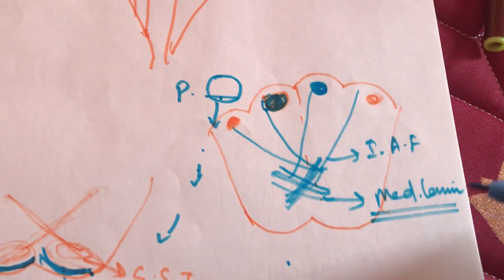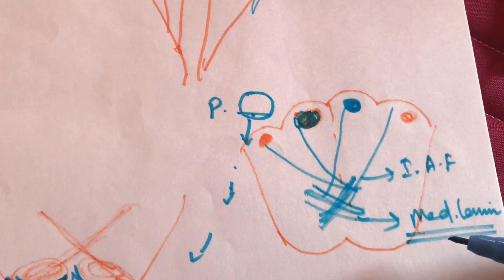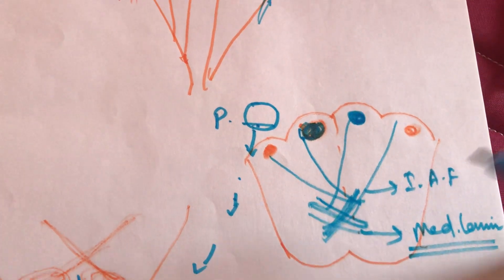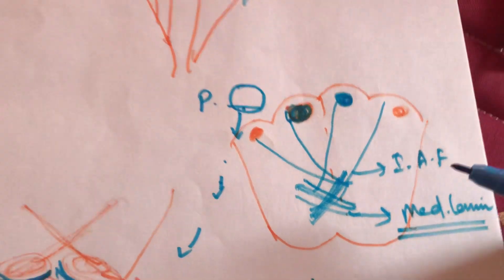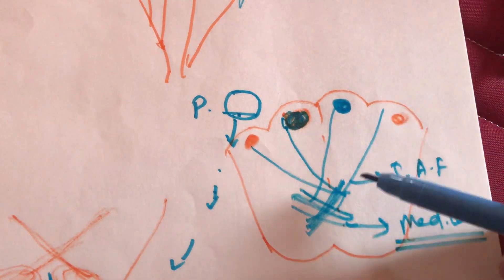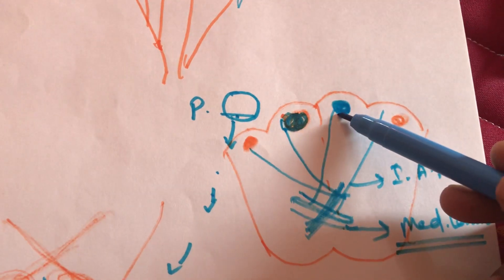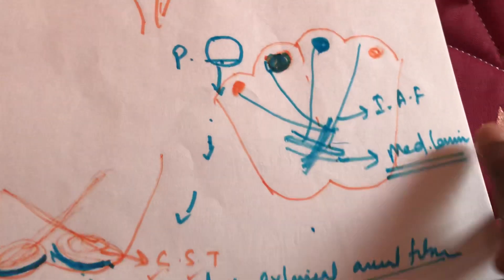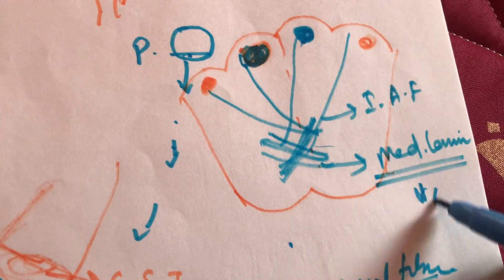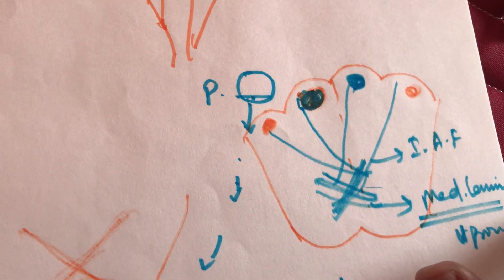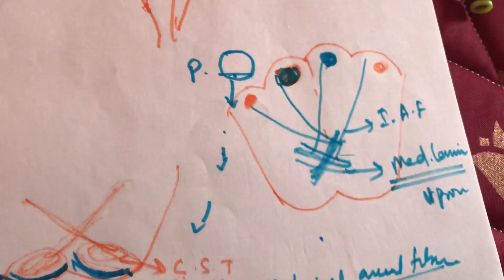If asked what forms the medial lemniscus, the answer is proprioceptive fibers — coming via fasciculus gracilis and cuneatus, meeting nucleus gracilis and cuneatus, decussating, and forming the medial lemniscus. Spinal lemniscus is the decussation of the spinothalamic tract, which carries pain and temperature — that is different. So medial lemniscus is for proprioception; spinal lemniscus is for spinothalamic tract.